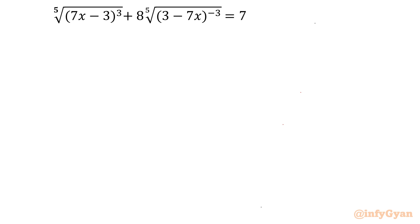Hello everyone, welcome to Infigyan. In this exciting video on algebraic challenging equations, we will be solving an interesting radical equation: the 5th root of (7x minus 3) cubed, plus 8 times the 5th root of (3 minus 7x) to the power negative 3, equals 7. We will find the real values of x, using exponent properties and the quadratic equation formula. Let's get started.